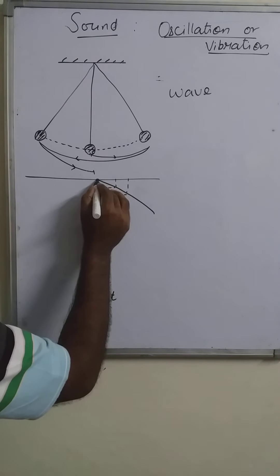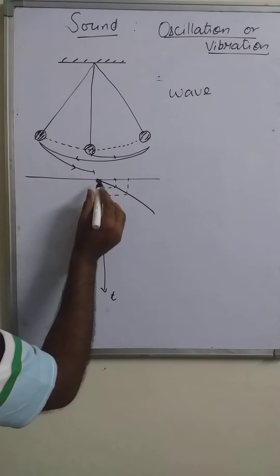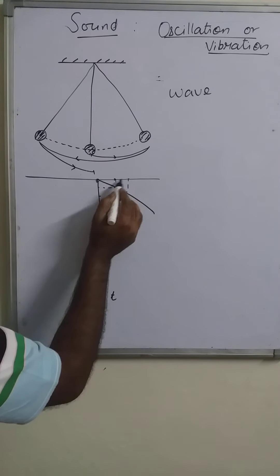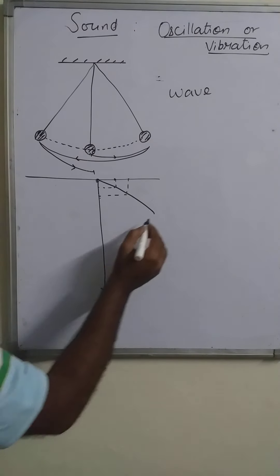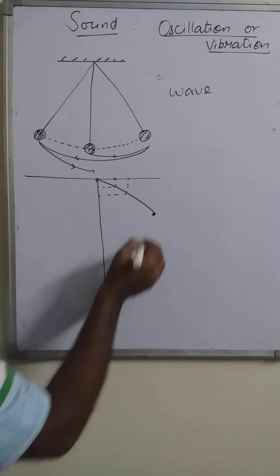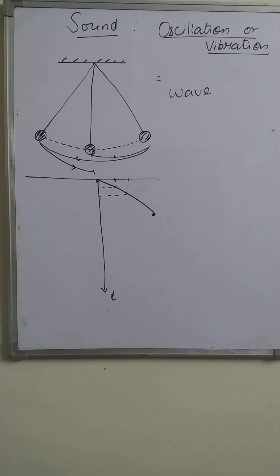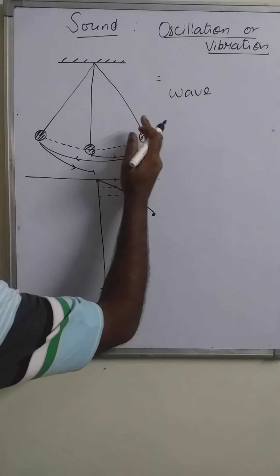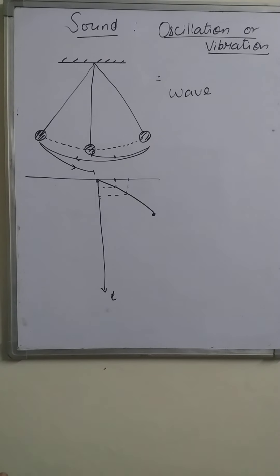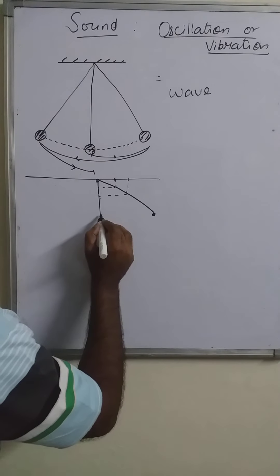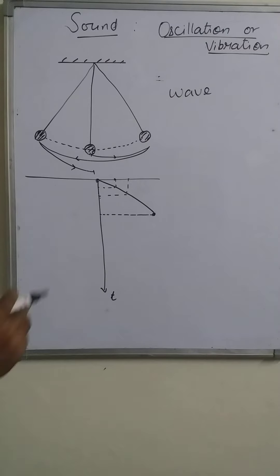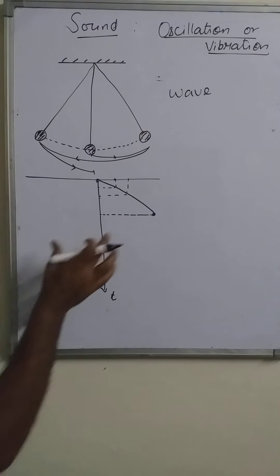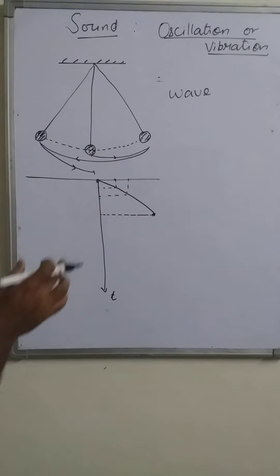From this point to the next, the position is increasing and the time also increases. Like this, it reaches the maximum position, that is the extreme position. From the mean position to the extreme position, the maximum displacement is called the amplitude. This point represents the maximum displacement of the particle from the mean position, so we say this is the amplitude of this oscillation.